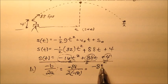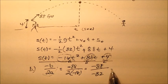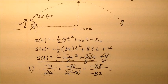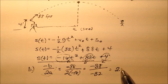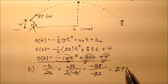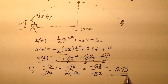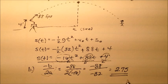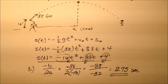When I simplify, I have -88 over -32, which comes out to 2.75. This is our independent variable, which in our case is time. So it's 2.75 seconds.